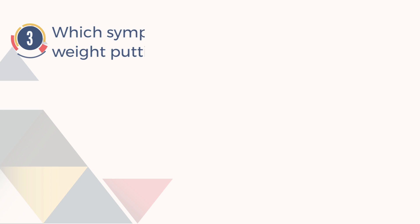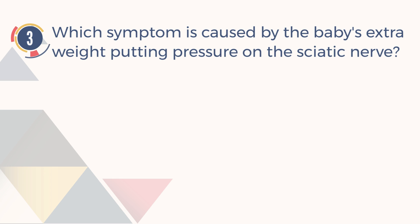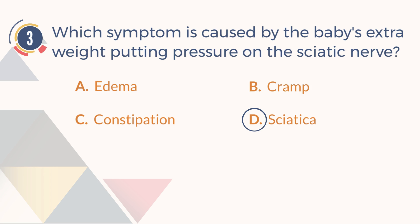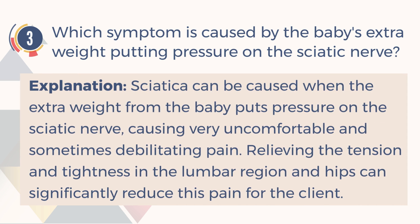Number 3. Which symptom is caused by the baby's extra weight putting pressure on the sciatic nerve? A. Edema. B. Cramp. C. Constipation. D. Sciatica. The answer is D, sciatica. Sciatica can be caused when the extra weight from the baby puts pressure on the sciatic nerve, causing very uncomfortable and sometimes debilitating pain. Relieving the tension and tightness in the lumbar region and hips can significantly reduce this pain for the client.